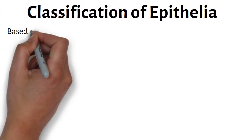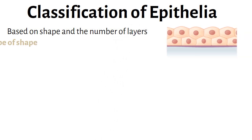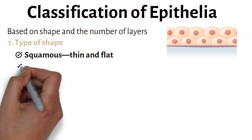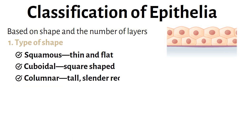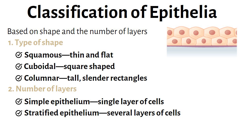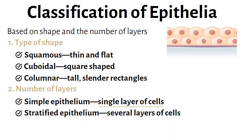The classification of epithelia is based on shape and the number of layers. Shapes include squamous, which is thin and flat; cuboidal, which is square-shaped; and columnar, which has tall, slender rectangles. The number of layers can either be simple or stratified. Simple epithelium has a single layer of cells, while stratified epithelium has several layers of cells.